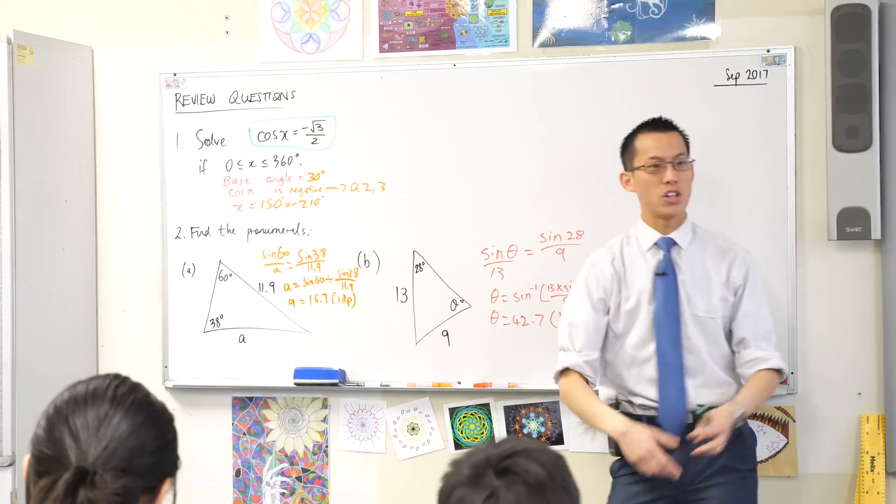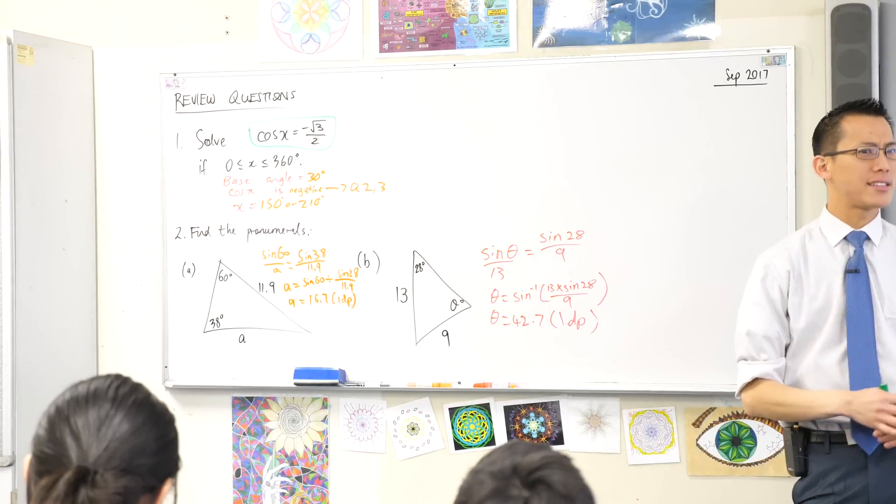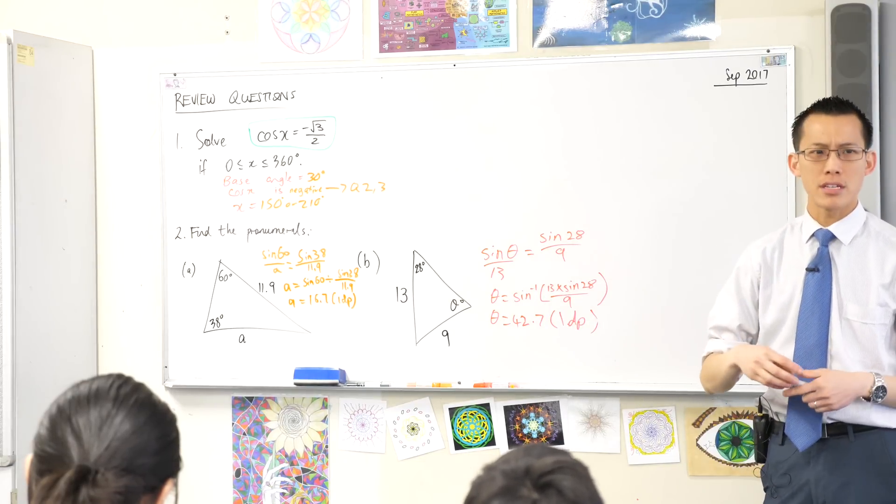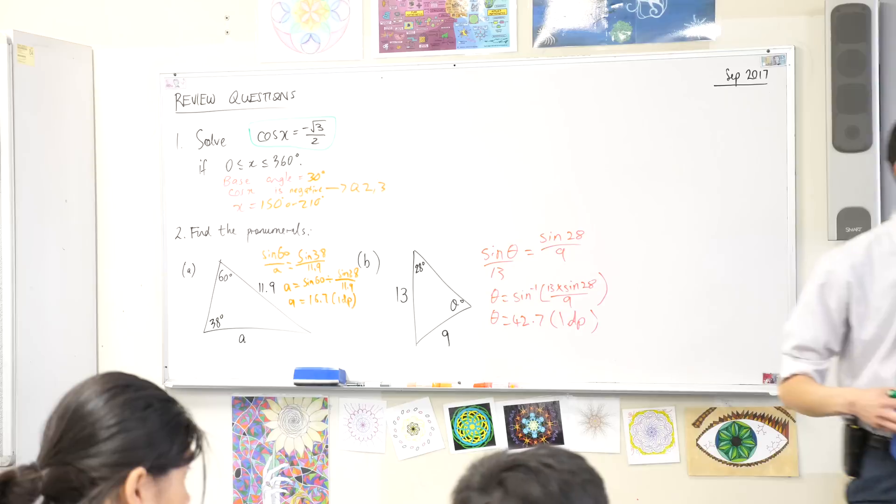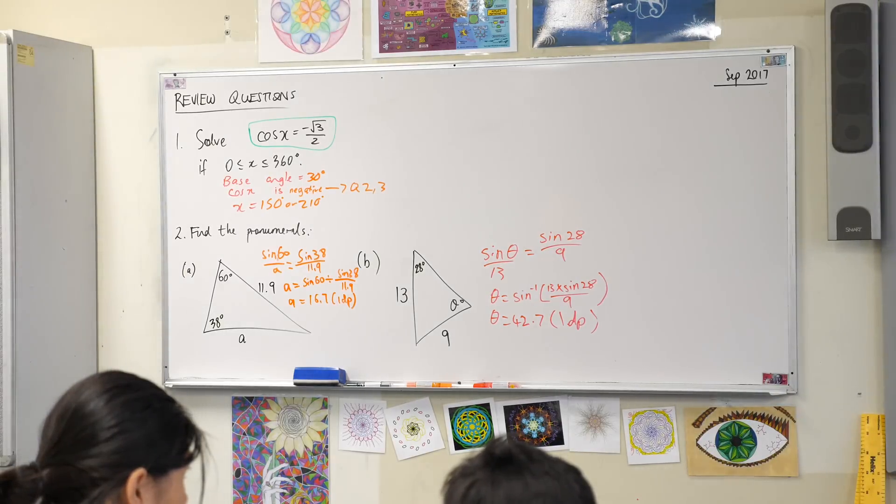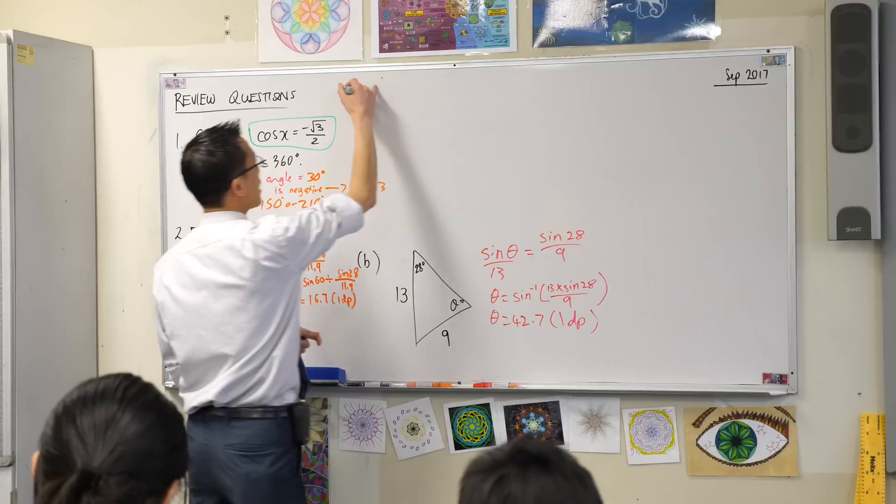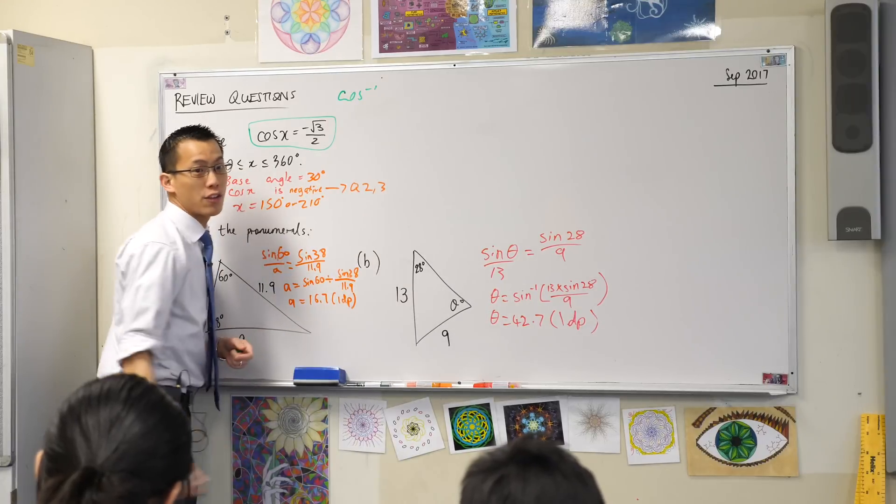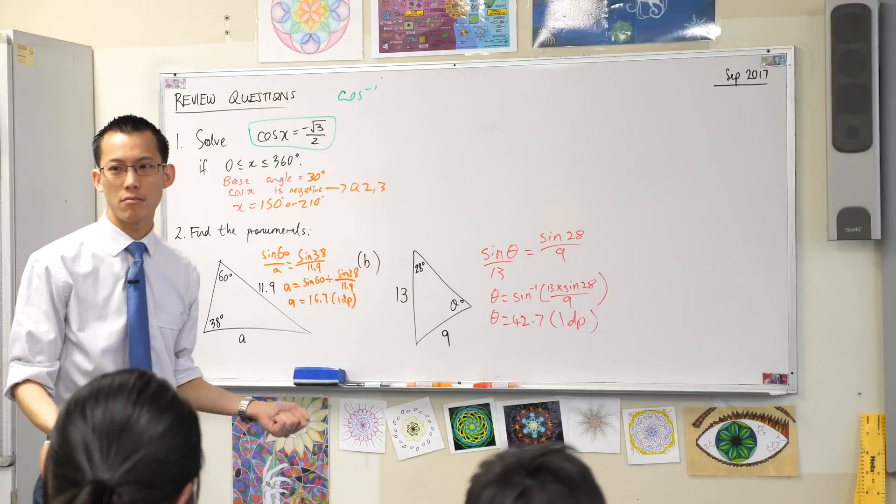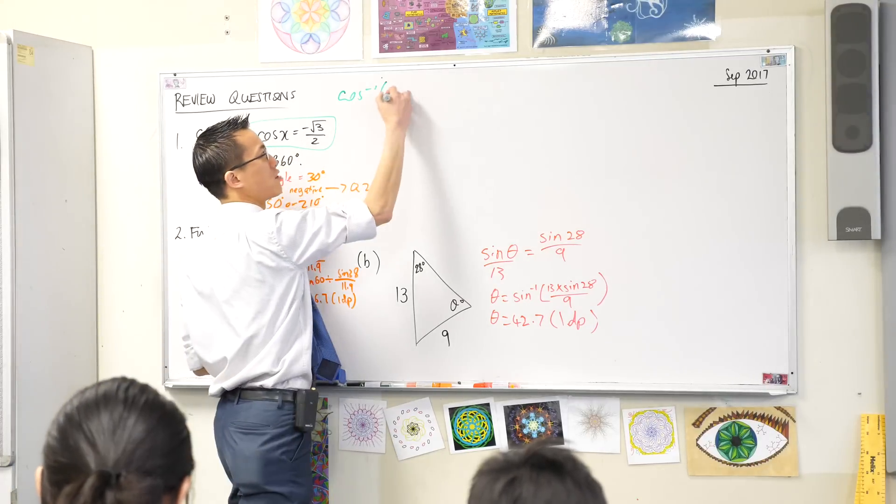Let's start with the first line. We're looking for a base angle. A base angle. 30 degrees is the suggestion. How do we find 30 degrees? Where does that come from? I heard the word inverse. Inverse what? Okay, so cos inverse. So on your calculator you might have punched in that. Cos inverse of what? Just root 3 on 2.